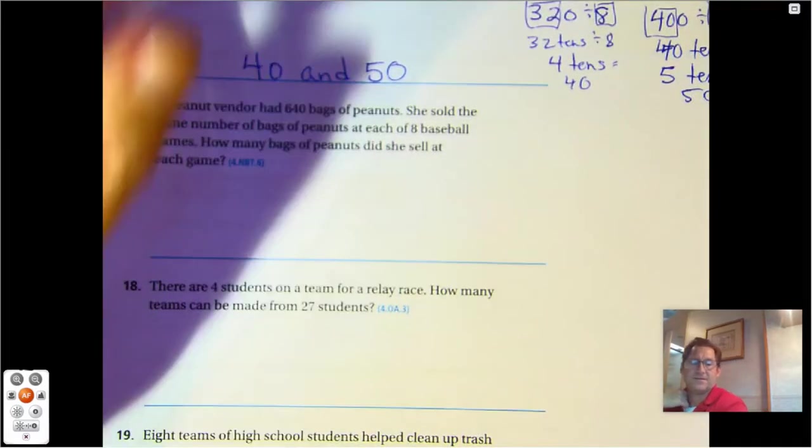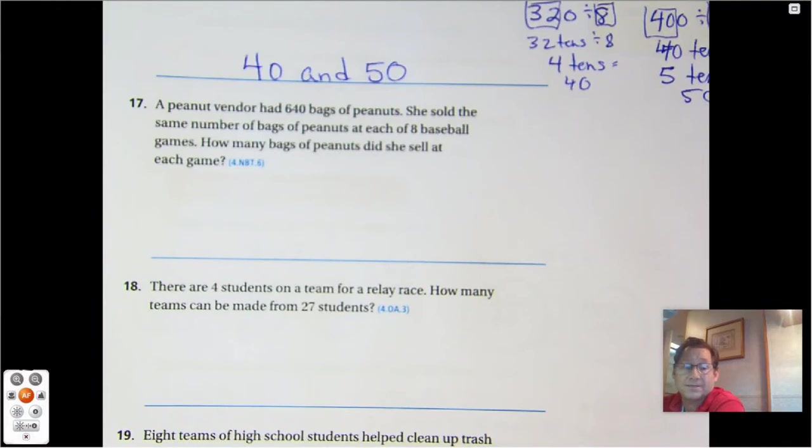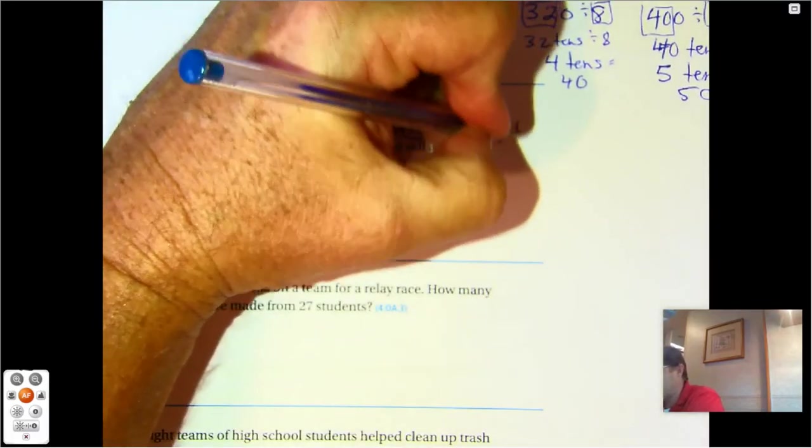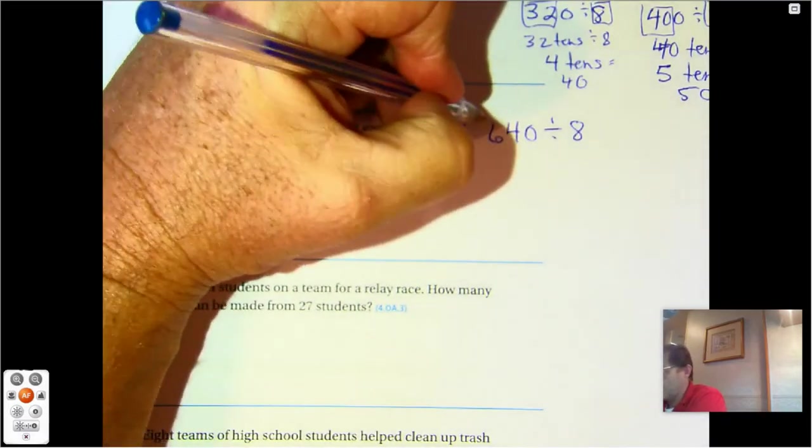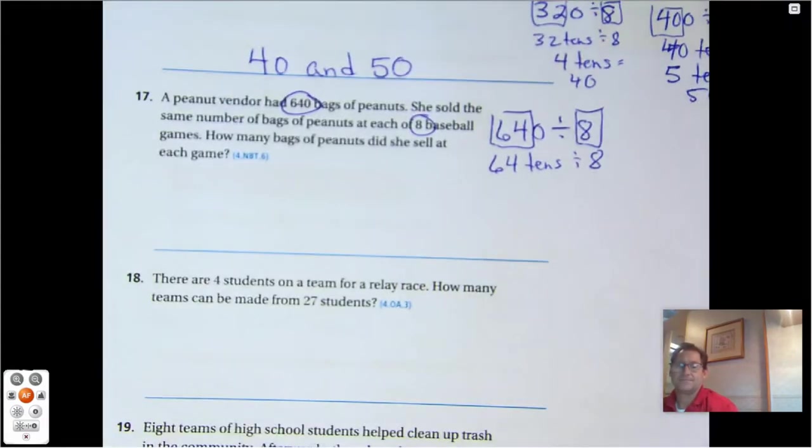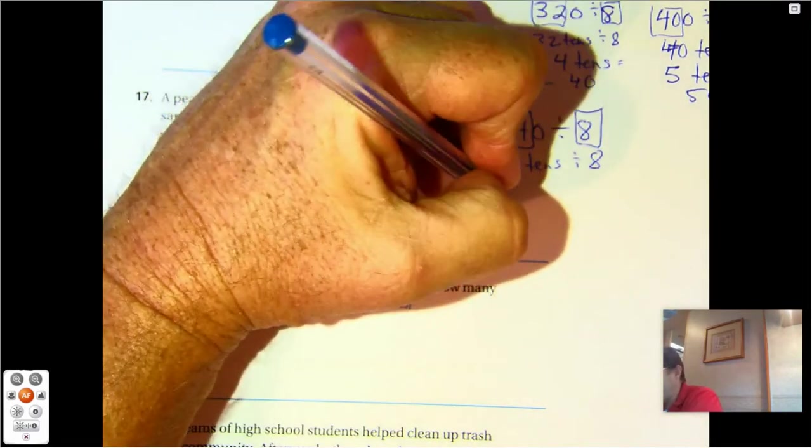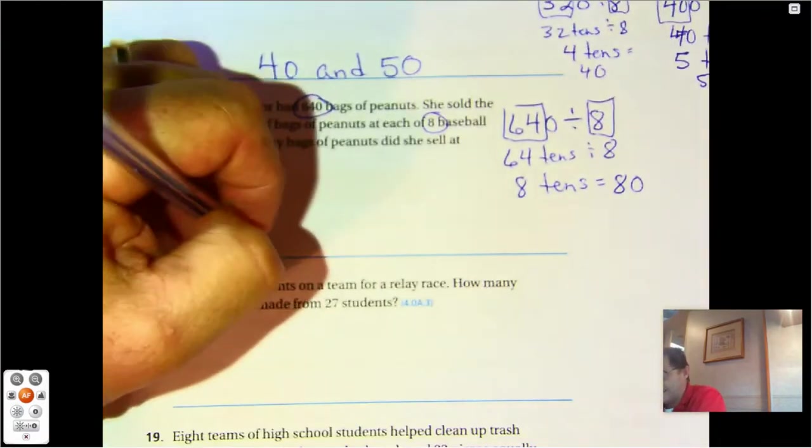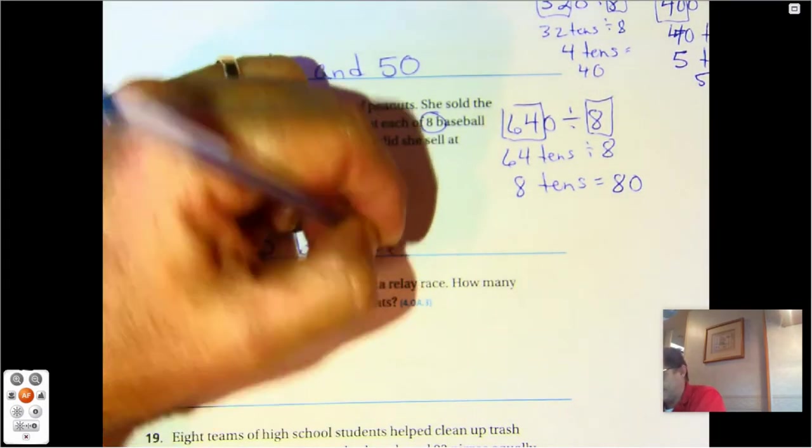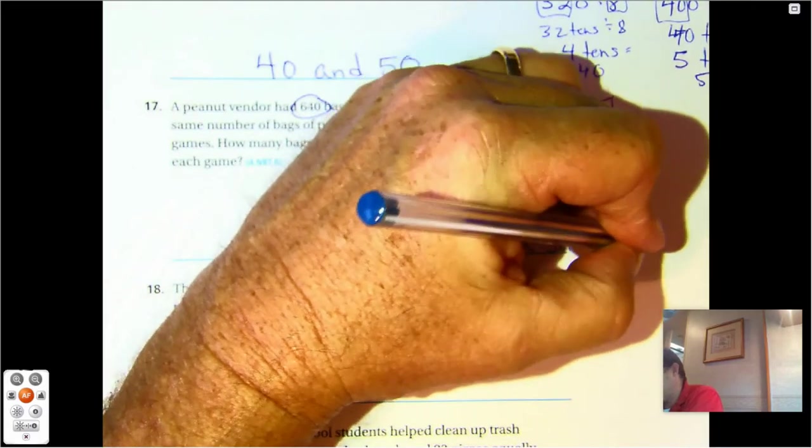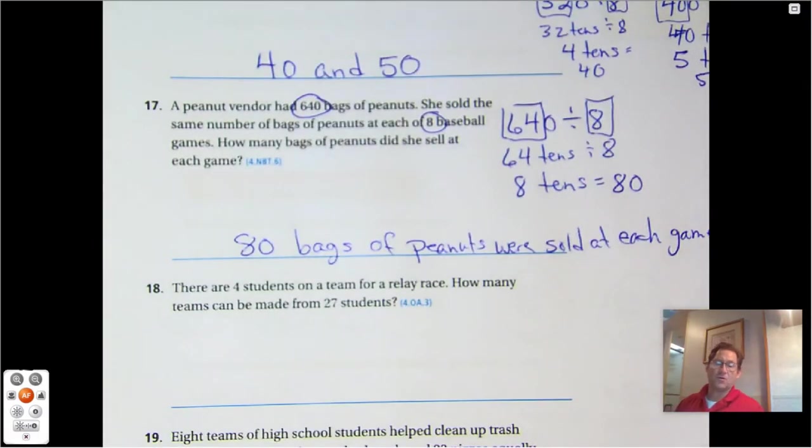Number 17: A peanut vendor had 640 bags of peanuts. She sold the same number of bags of peanuts at each of eight baseball games. How many bags of peanuts did she sell at each game? 640 bags, eight baseball games. So our division problem is 640 divided by eight. This is a basic math fact. 64 tens divided by eight: eight times eight is 64. So 64 tens divided by eight is eight tens. Eight tens equals 80. So the peanut vendor sold 80 bags of peanuts at each game.